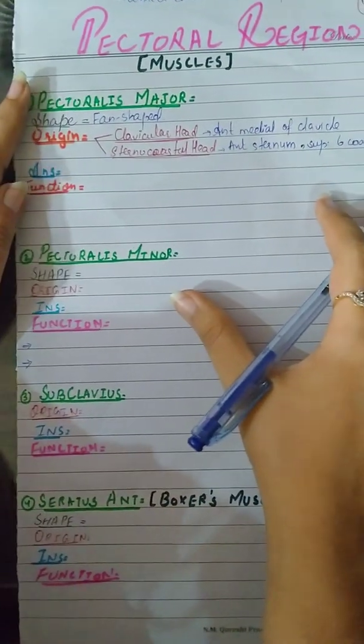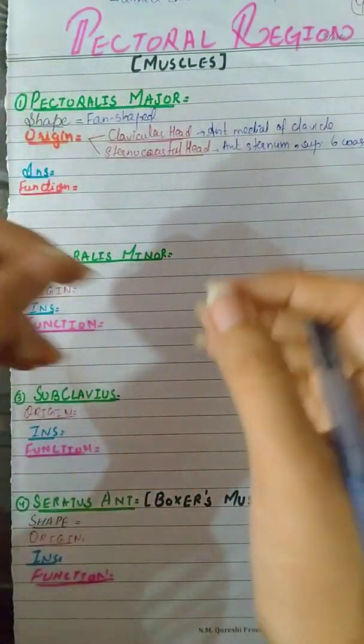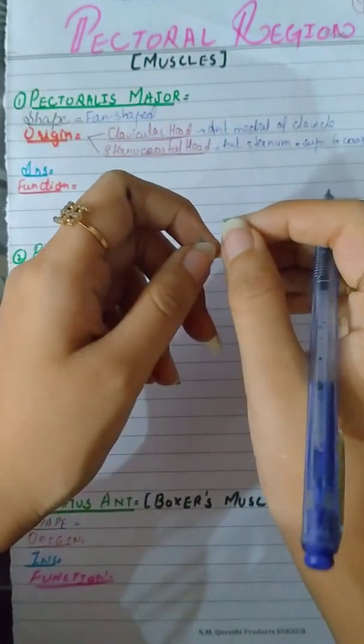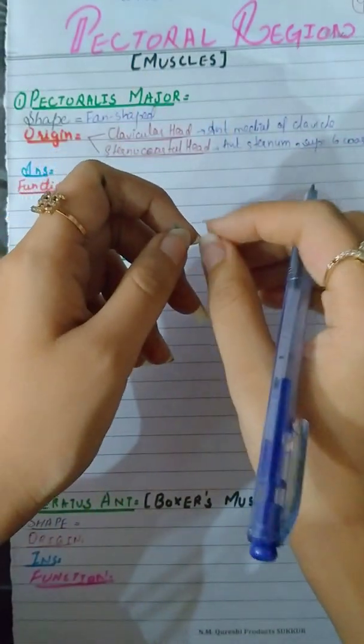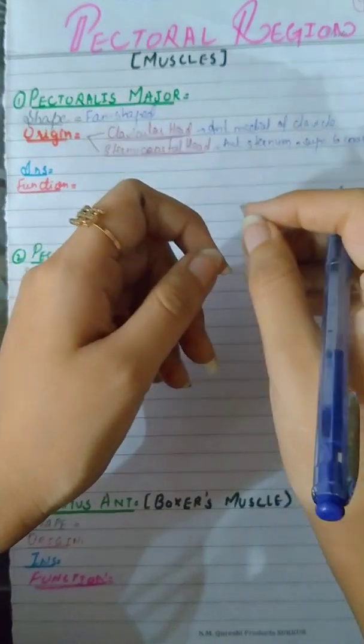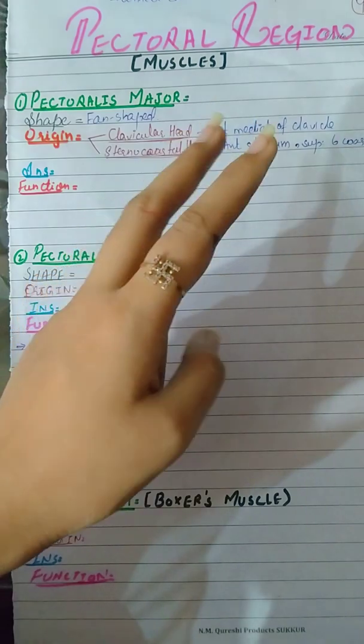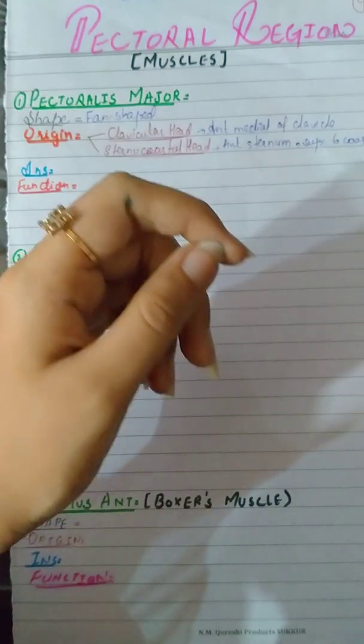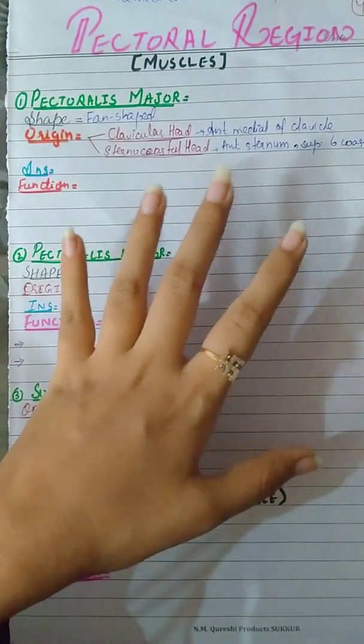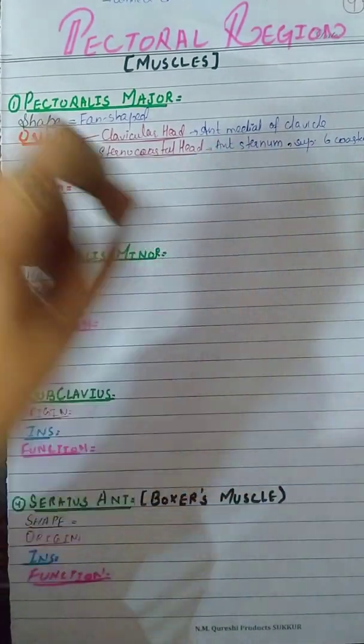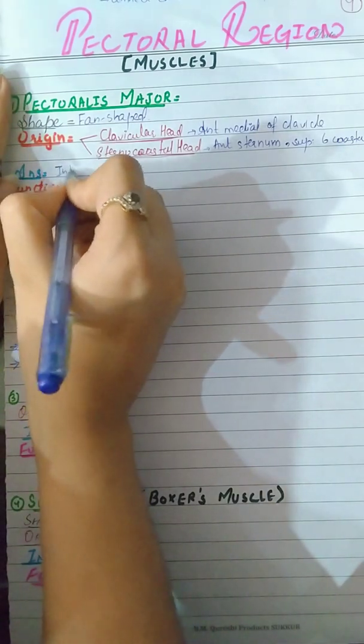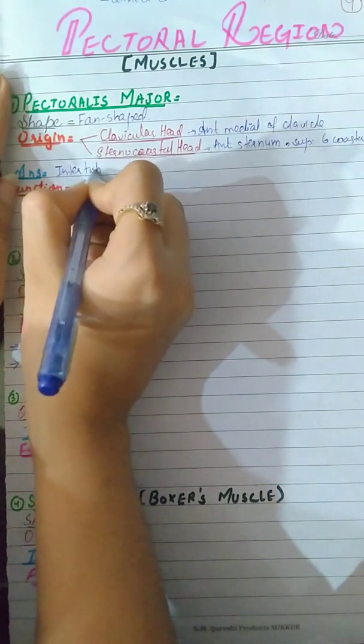Then its insertion. There's a trick: 'the lady between two majors.' The lady shows the lateral intertubercular sulcus, and the two majors are pectoralis major and teres major. So its insertion is on the intertubercular sulcus, on the lateral lip.